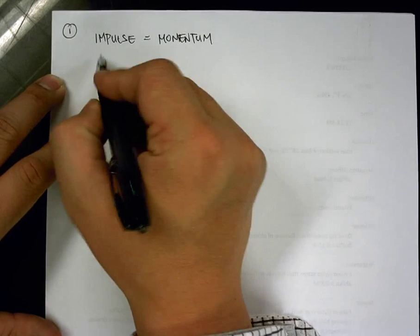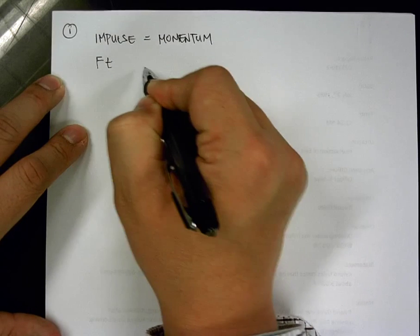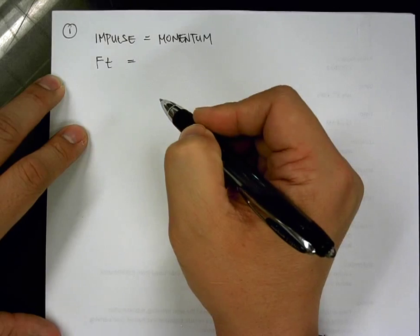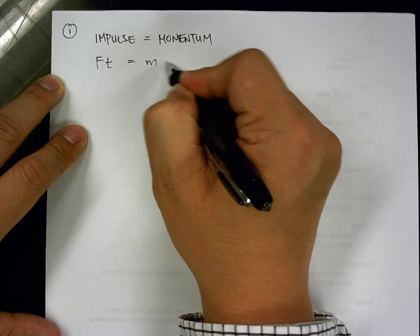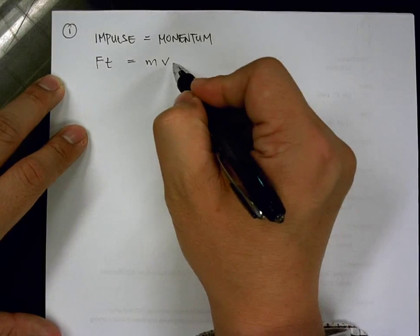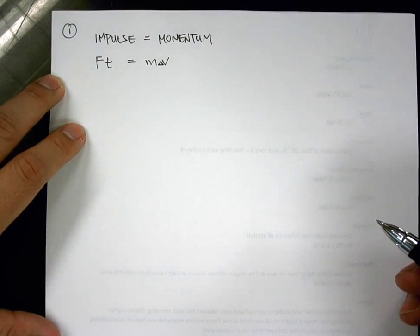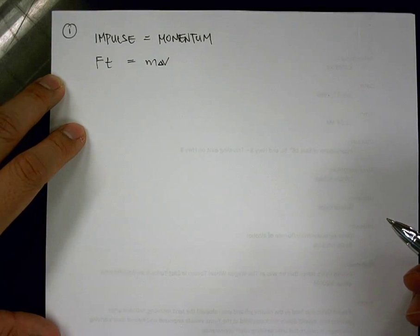As you know, impulse is equal to the equation F times t, and that momentum has the equation of mass times velocity, right? But in this case, we're dealing with the change in velocity, because the momentum will change once an impulse is exerted on the object.